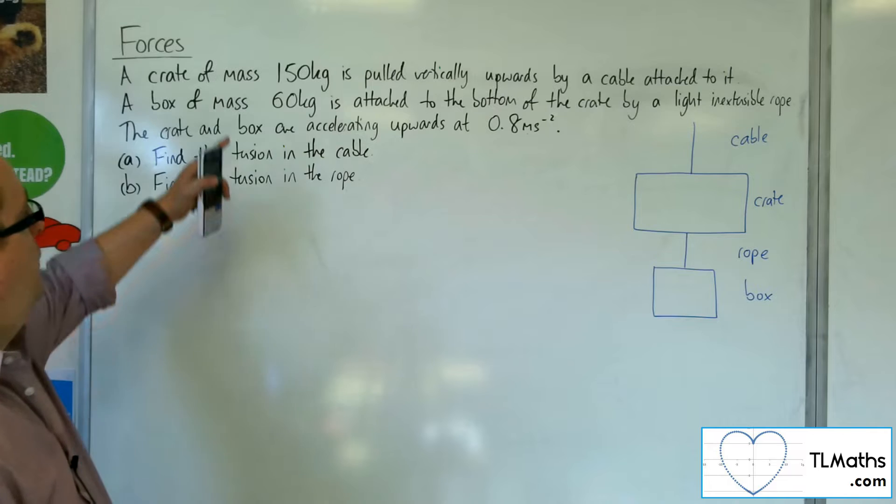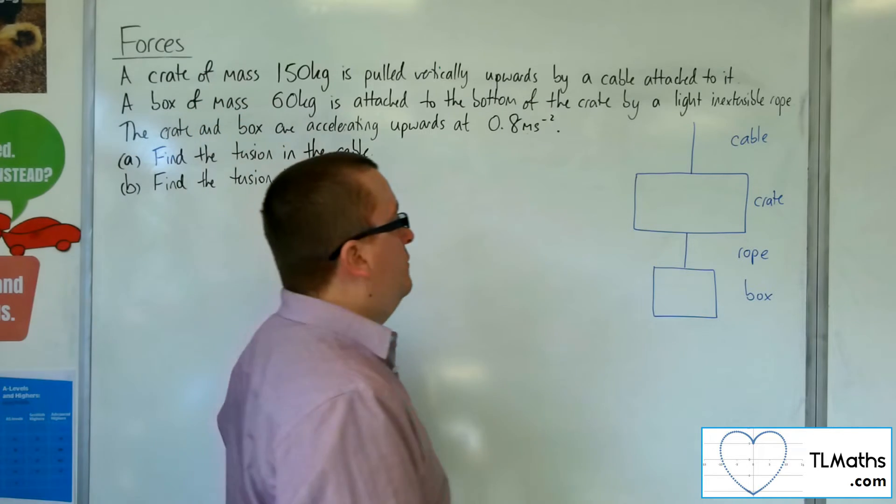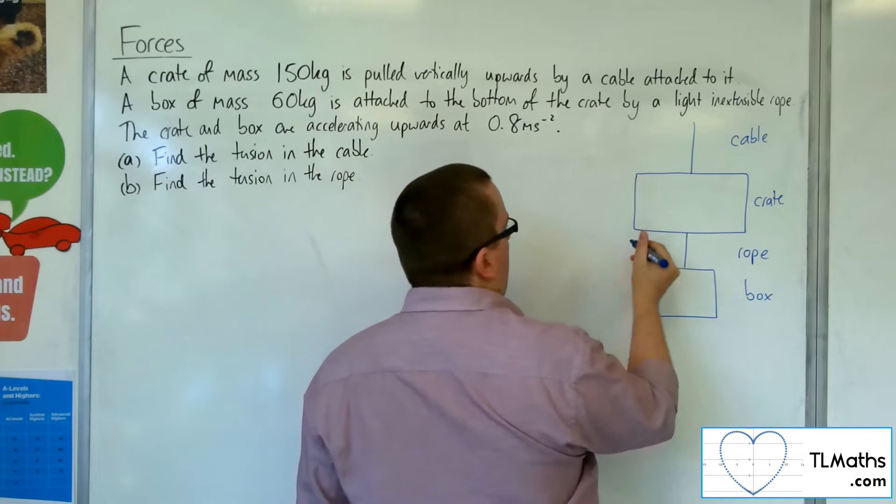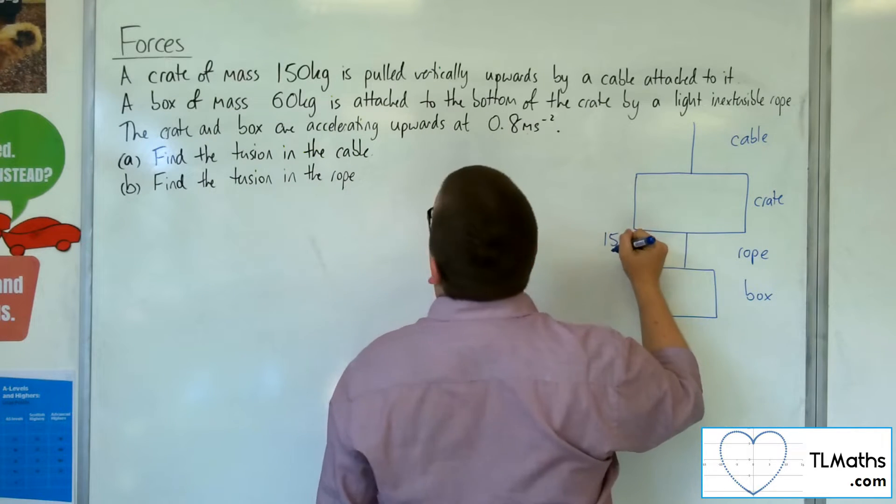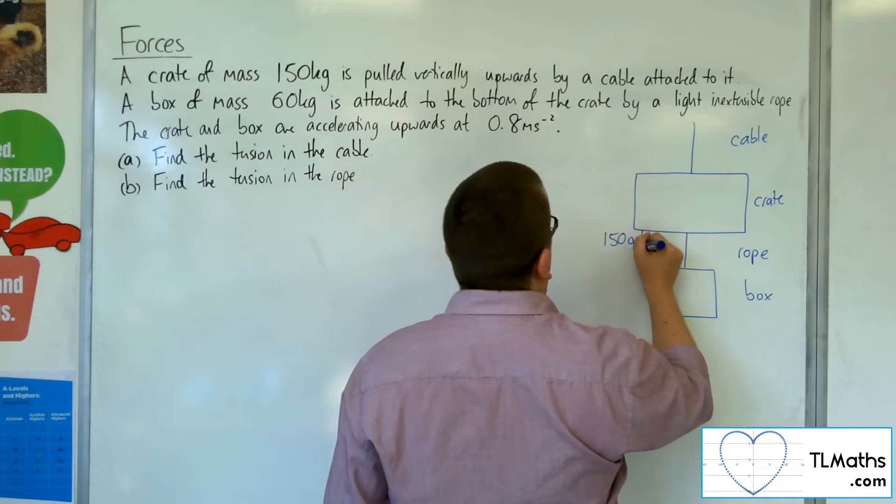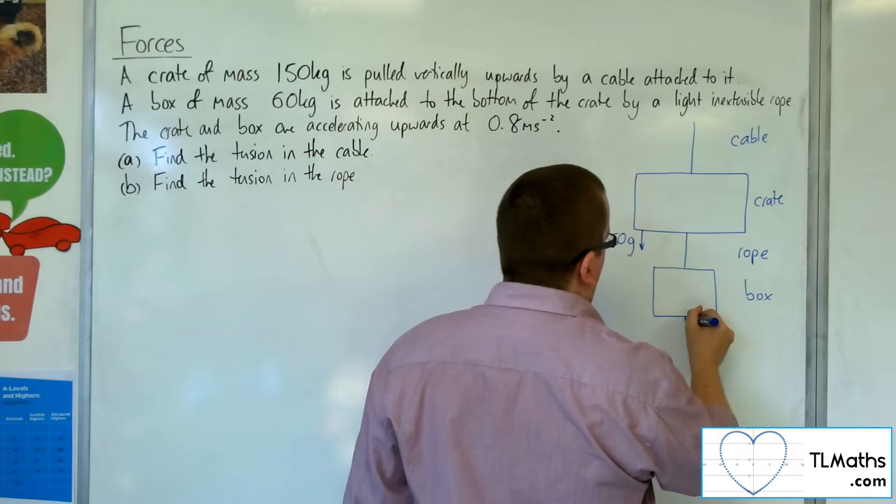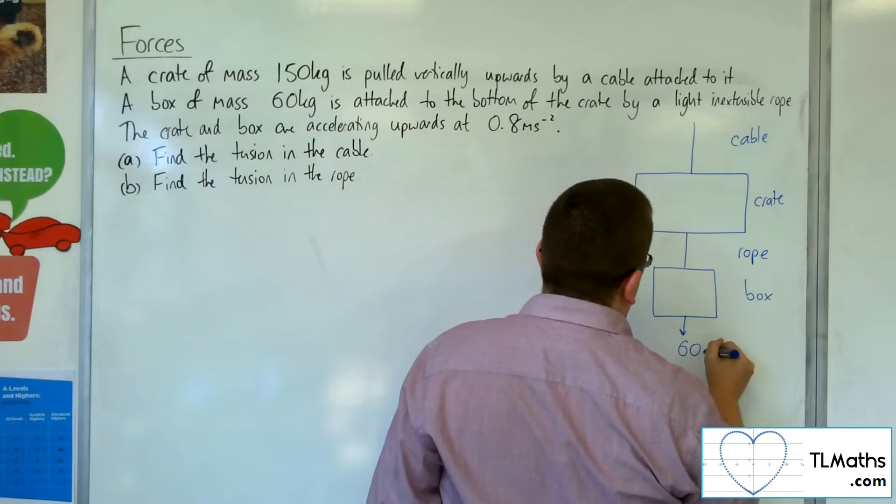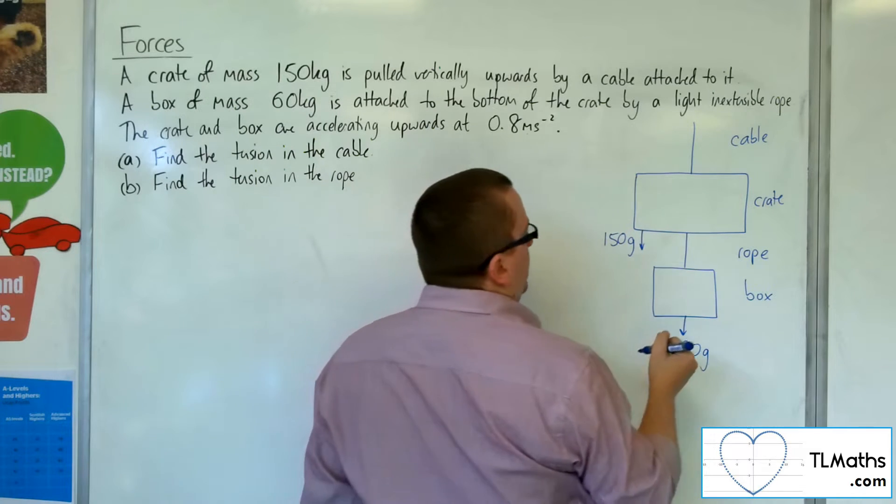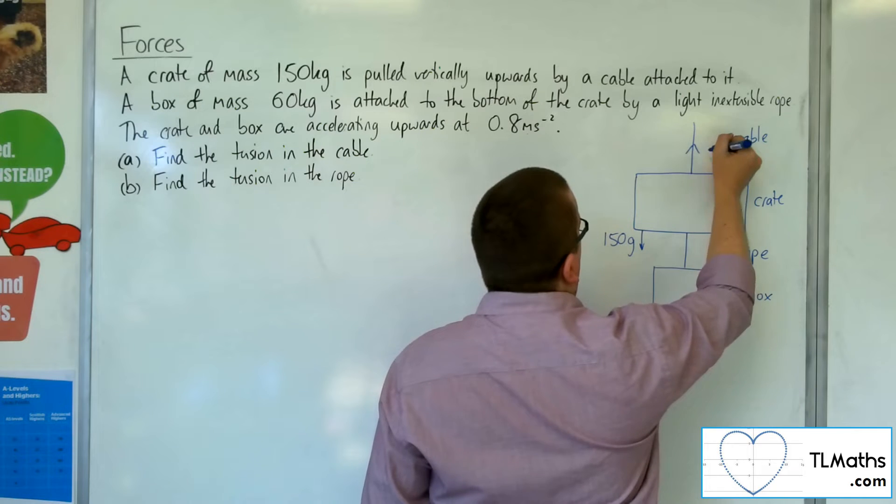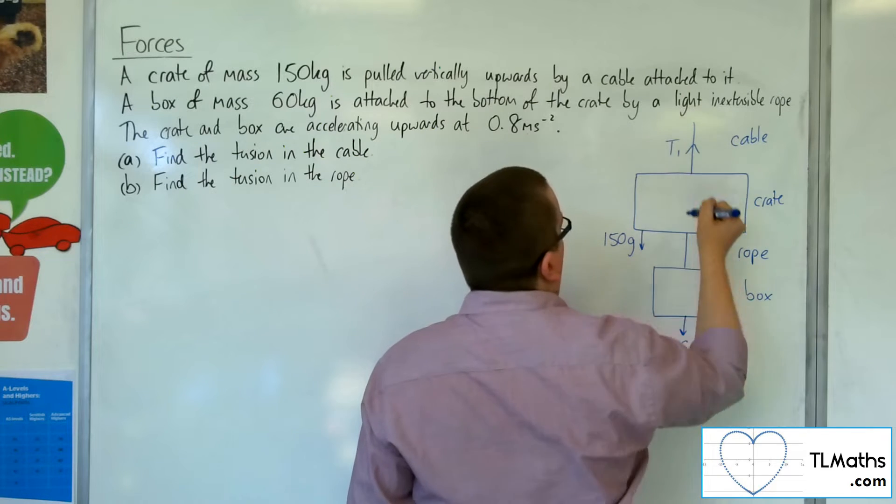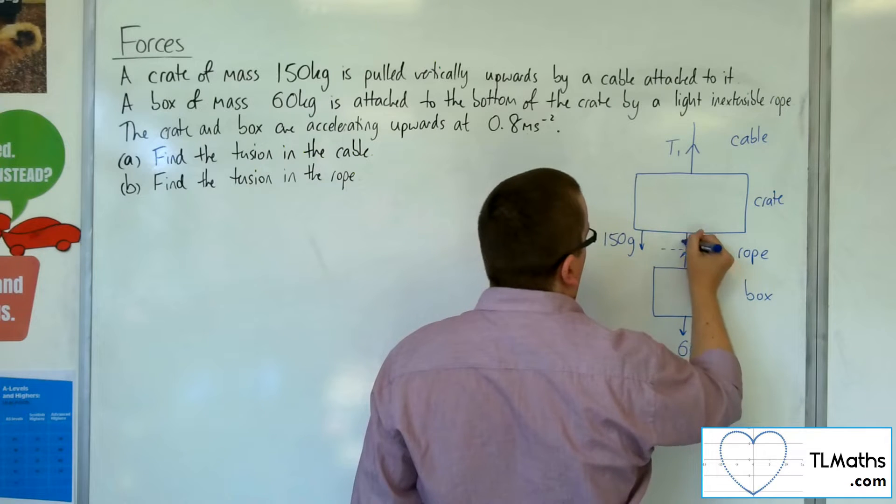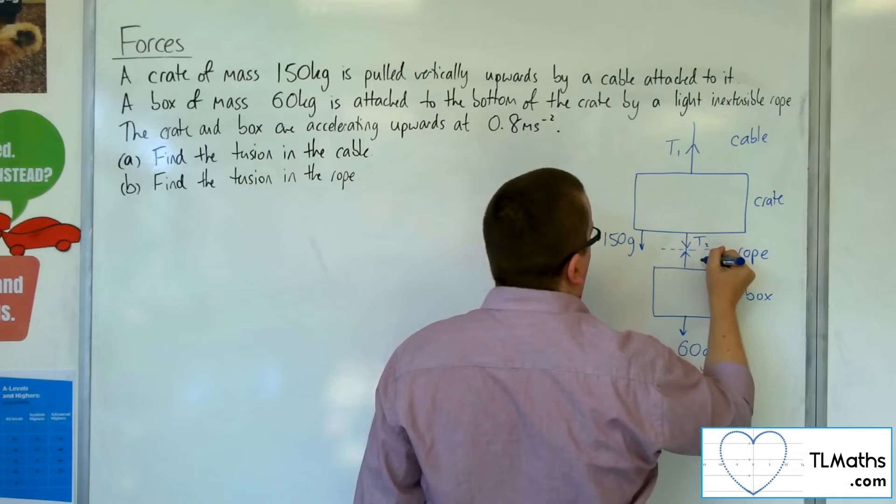Now, the crate has a mass of 150 kilos, so I'm going to draw the weight here as 150G. And we've got the weight of the box is 60G. There's going to be this tension in the cable, which I'm going to call T1, and this tension in the rope, which I'm going to call T2.